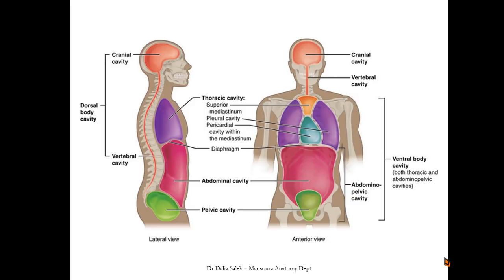The dorsal body cavity is further subdivided into two. Above, we have the cranial cavity, which lies inside the skull and contains the brain and its surrounding membranes. While below it lies the vertebral cavity, which lies within the vertebral column and contains the spinal cord and its surrounding membranes.